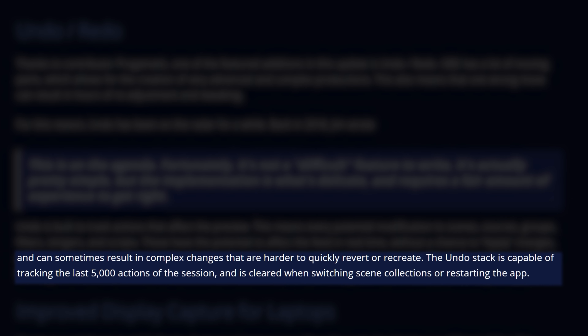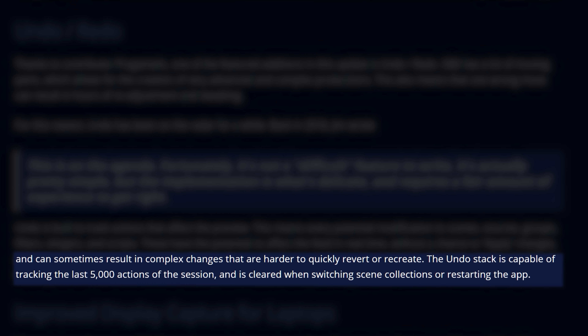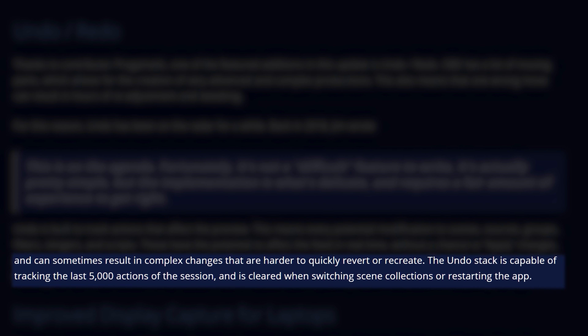In testing, I tried to find how many steps backwards you could go with undo and couldn't find a limit. Looking further, OBS released a blog post stating the limit is 5,000 actions, so you're covered no matter how many mistakes you make. This should help with pixel-perfect alignments when setting up overlays or your webcam — if you accidentally move a different layer, just hit Ctrl+Z to go back, so it should definitely help with alignment and scene setup.